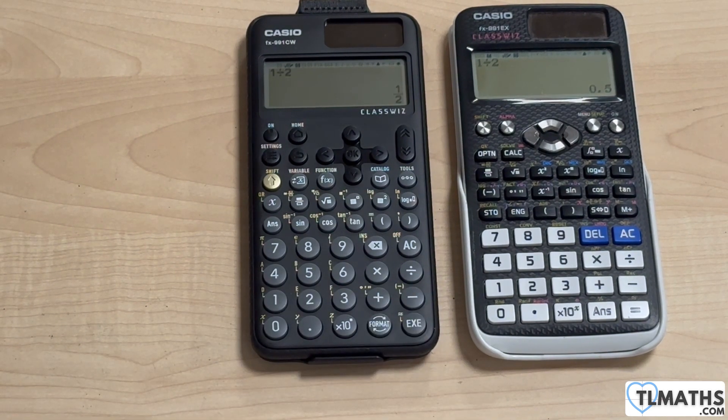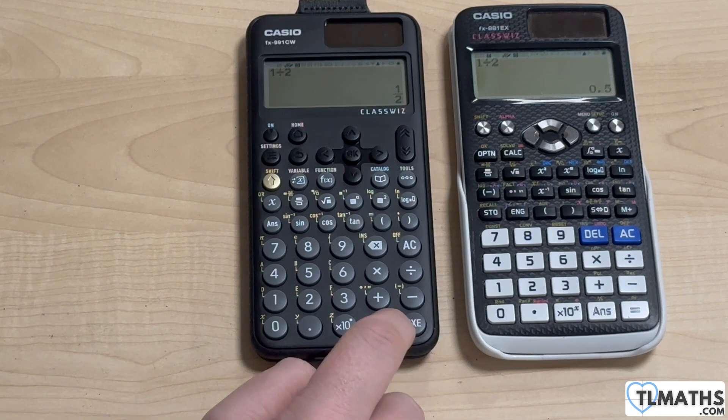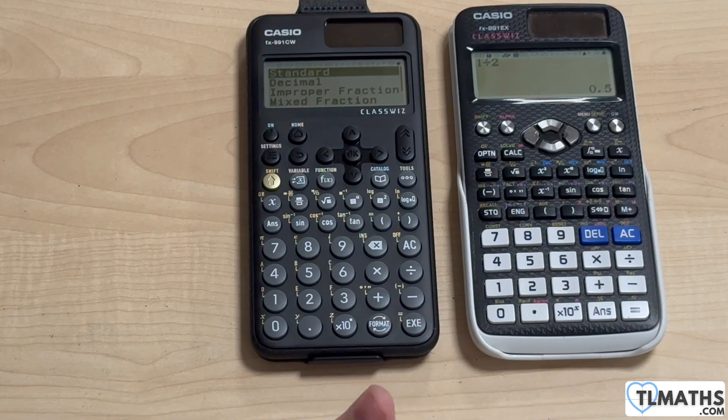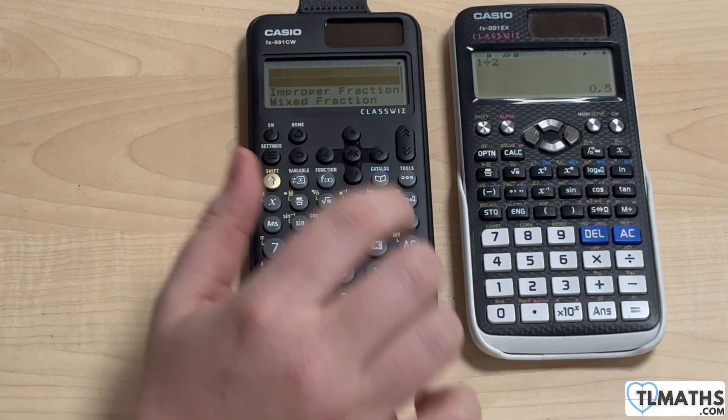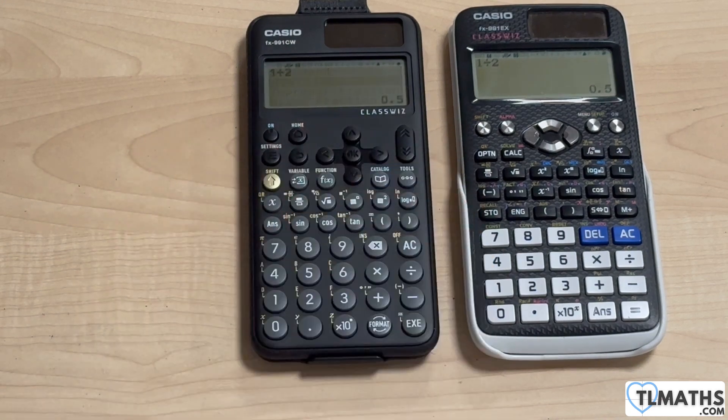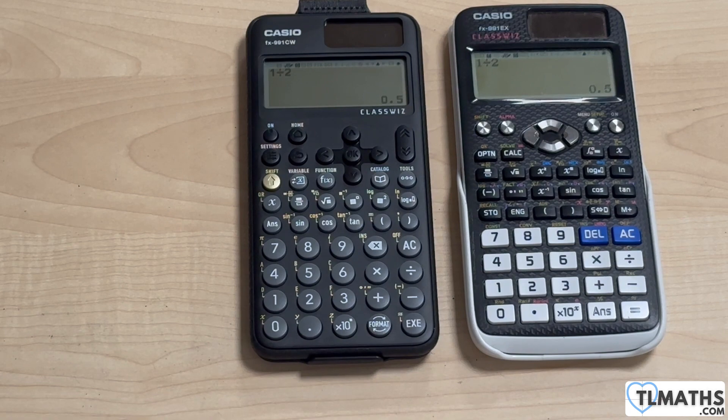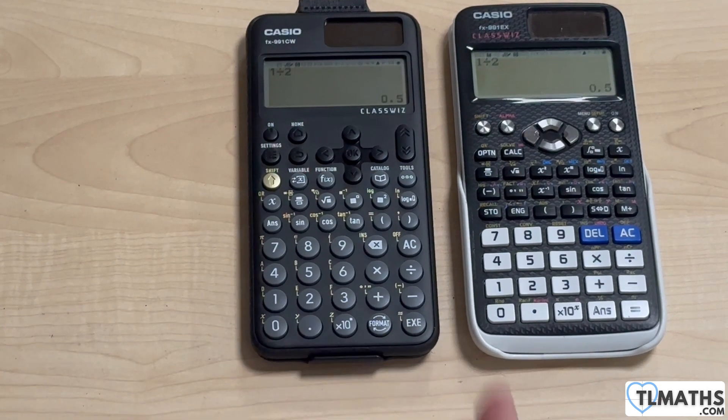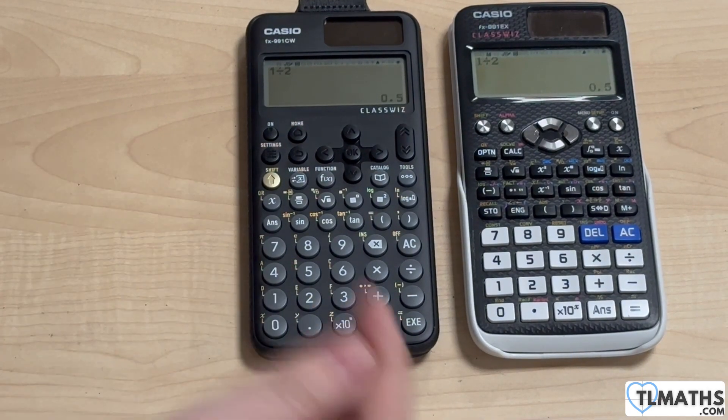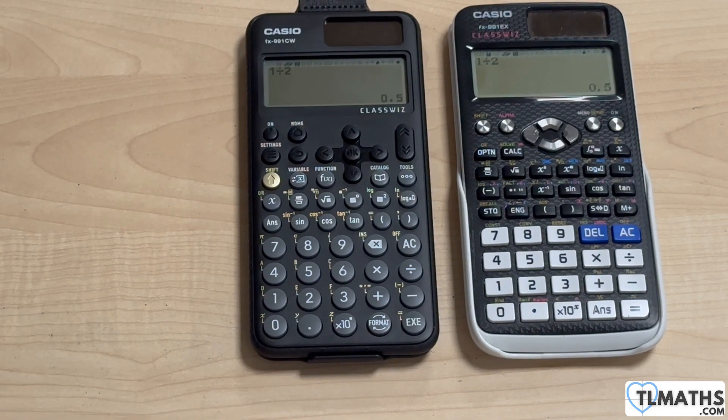Now if I want to get the decimal equivalent to that, then I need to go to format, and then I need to choose which format I want. Now I need to go down to decimal, press OK, and then I've got my decimal. Now that feels like a lot of work when actually why doesn't the format button cycle through the options?